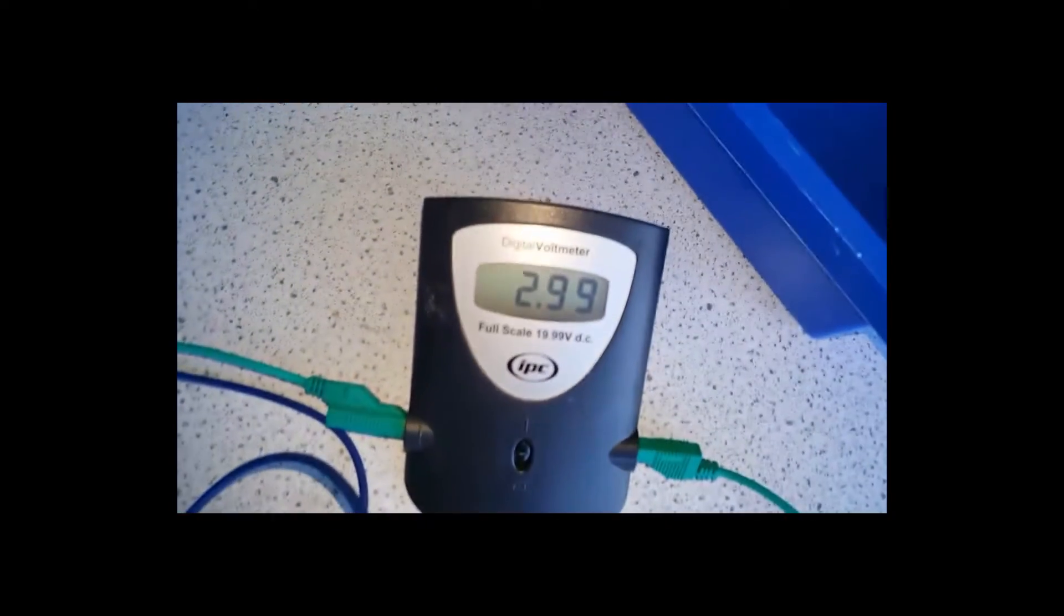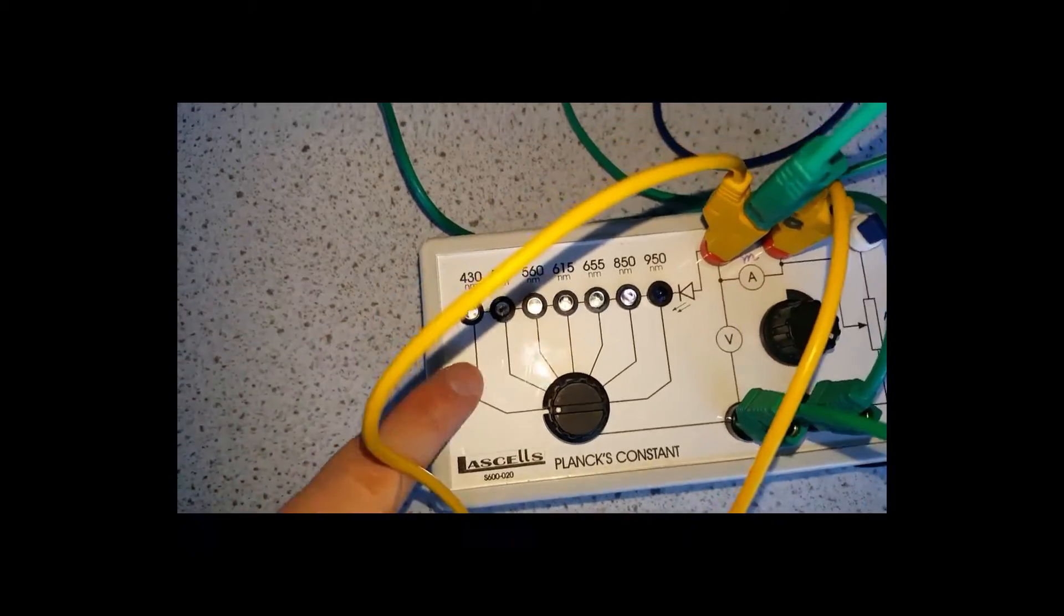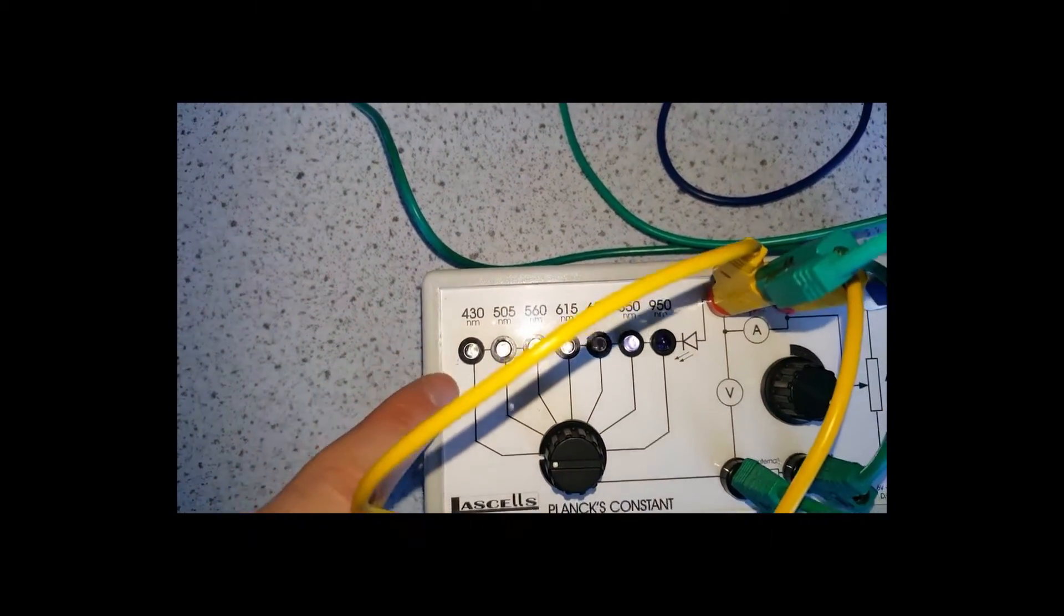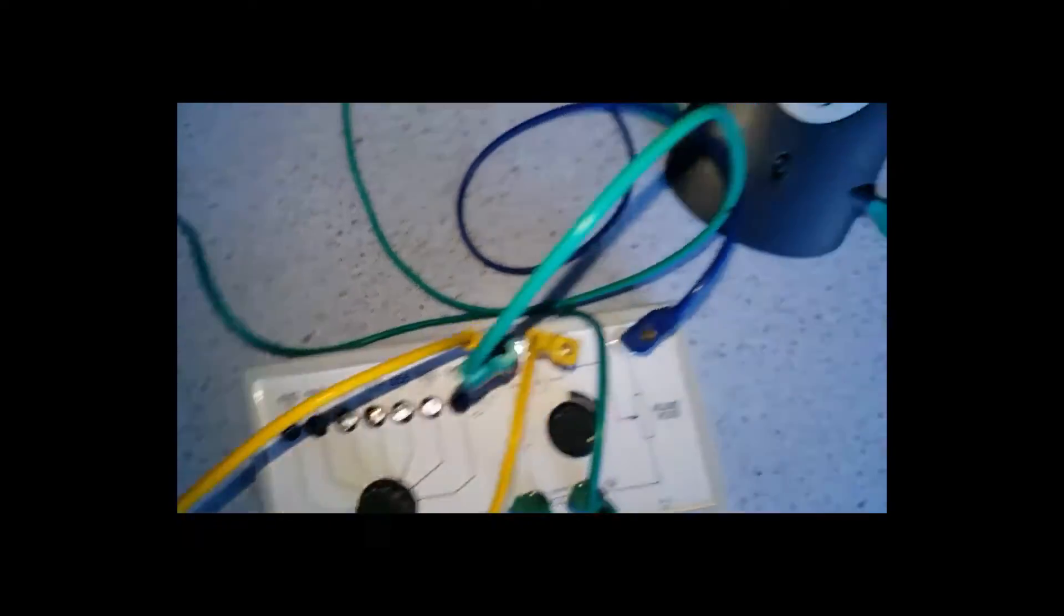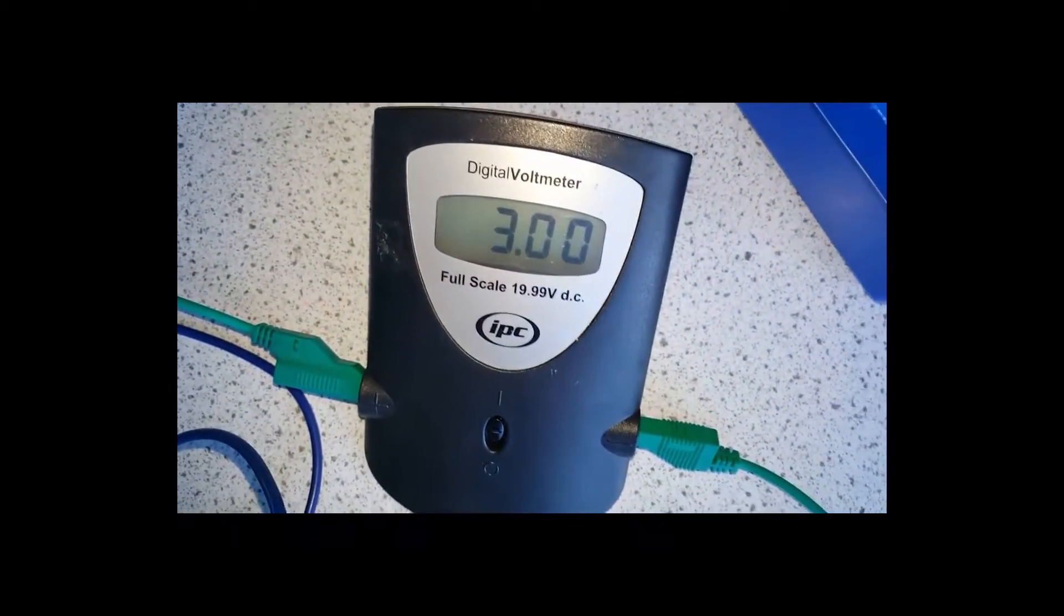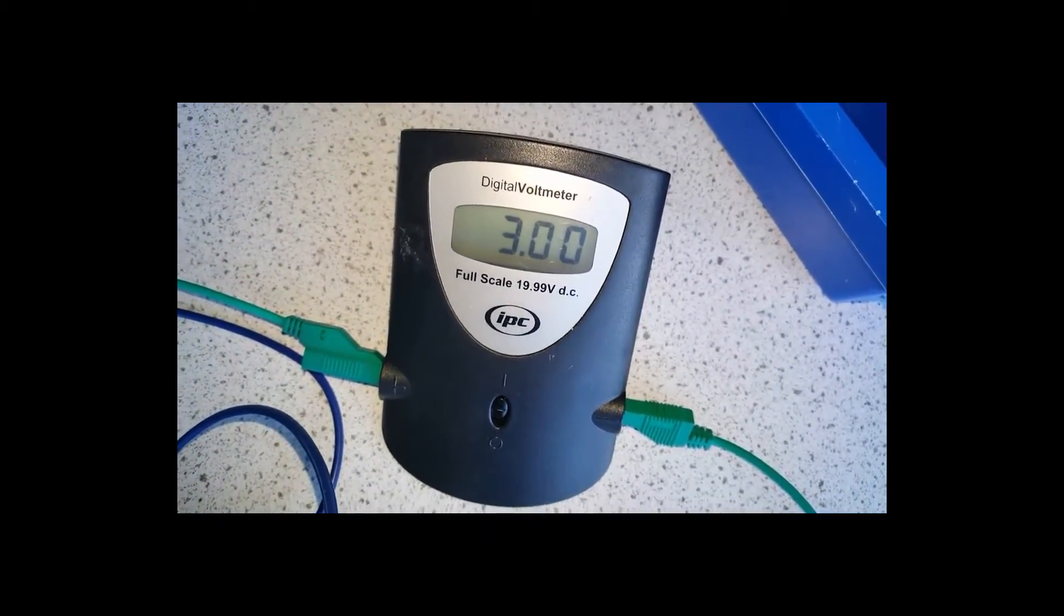Now I'm going to increase the voltage and we're going to look for the LED to just switch on. There we have it. So let's just look for those first glints of purple light. So it's about there. And that gives us a reading of 2.99 volts. So we would record, this is the 430 nanometer. So we'd record the wavelength of this LED and the voltage here, which is just ticked over to 3.00 volts.